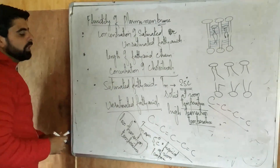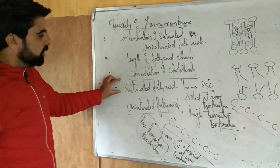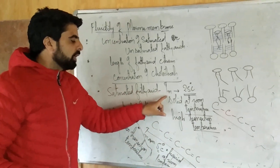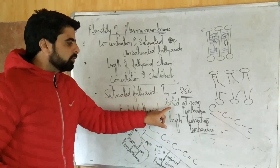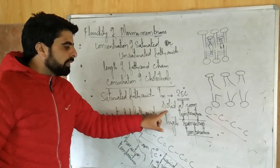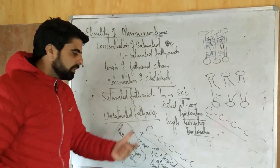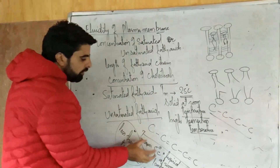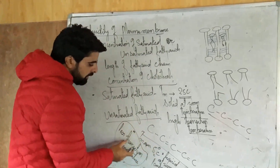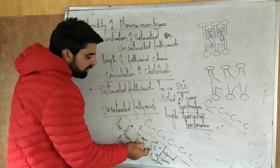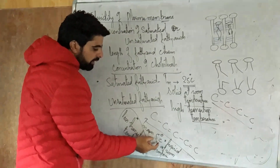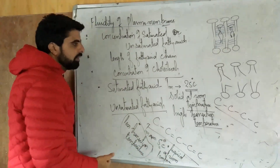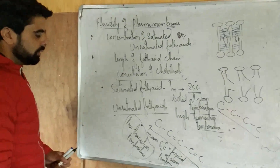Whenever you have to differentiate them: saturated fatty acids have high melting point or melting temperature, they are solid at room temperature, and they have a high transition temperature. Unsaturated fatty acids have a melting temperature of 5 degrees Celsius, they are liquid at room temperature, and they have a less transition temperature.